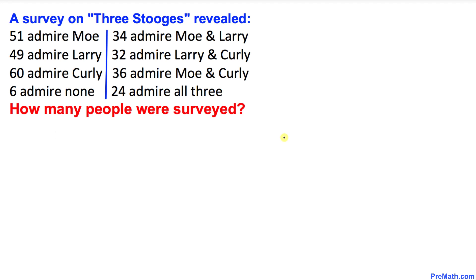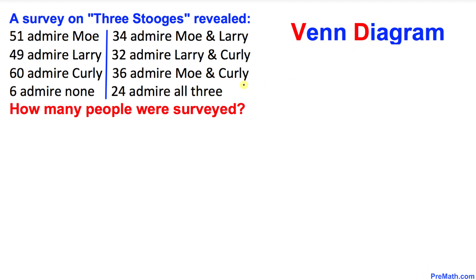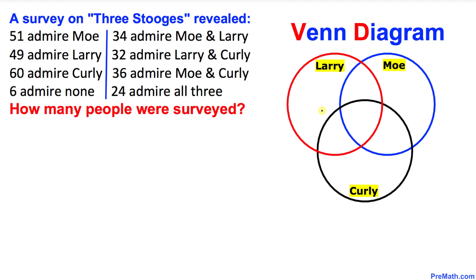Let's go ahead and get started with the solution. We are going to use the Venn diagram to solve this problem. Here's our Venn diagram with three intersecting circles representing Larry, Mo, and Curly. Now let's start filling in these numbers.